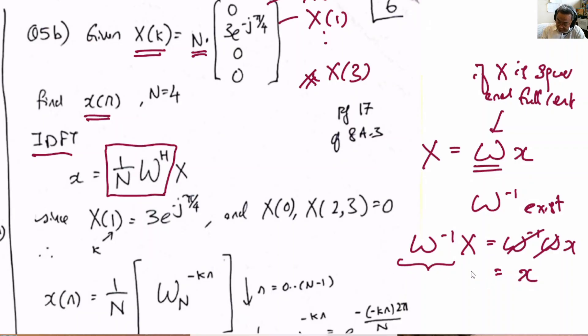So what is W inverse? Without the derivation, I'll tell you that the inverse of W matrix is actually 1 over N W^H. If you study the columns of the W matrix, you will realize that they are orthogonal columns with each other, and therefore 1 over N W^H is the inverse.